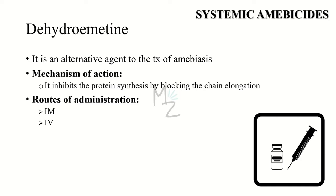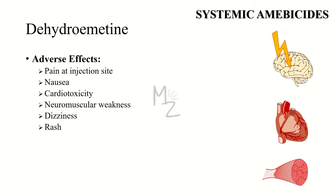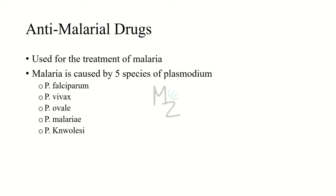The next systemic amebicide is dehydroemetine. It is an alternative agent for the treatment of amebiasis and acts by inhibiting protein synthesis by blocking chain elongation. The routes of administration are intramuscular (IM) and intravenous (IV), because it is an irritant when taken orally. Adverse effects include pain at the site of injection, nausea, cardiotoxicity such as arrhythmias and congestive heart failure, neuromuscular weakness, dizziness, and rash.